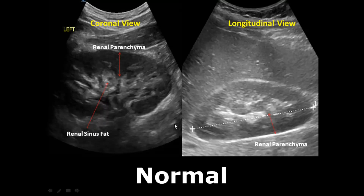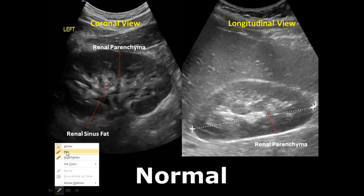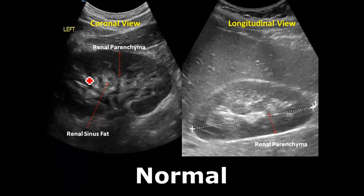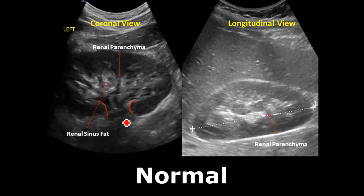The first one is the coronal view. We can see the left kidney and the renal parenchyma, which consists of the cortex — the outer region — and the medulla, the inner hypoechoic region. We also have the hyperechoic region which is the renal sinus fat. Because it has fat, it is more dense and appears hyperechoic. Below we can also see the renal pelvis, but we cannot see the ureter because normally we do not really see the ureters.